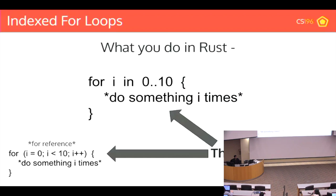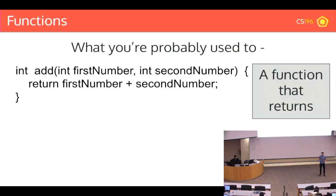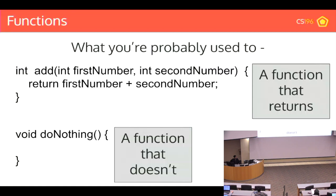Let's talk about functions. This is probably what you're used to — an add function with a return type of integer, taking in two parameters (first number and second number, both integers), returning their sum. This is a C-style function. If we don't want to return a value, we have the void property — we can say the return type is void, so the function does nothing.